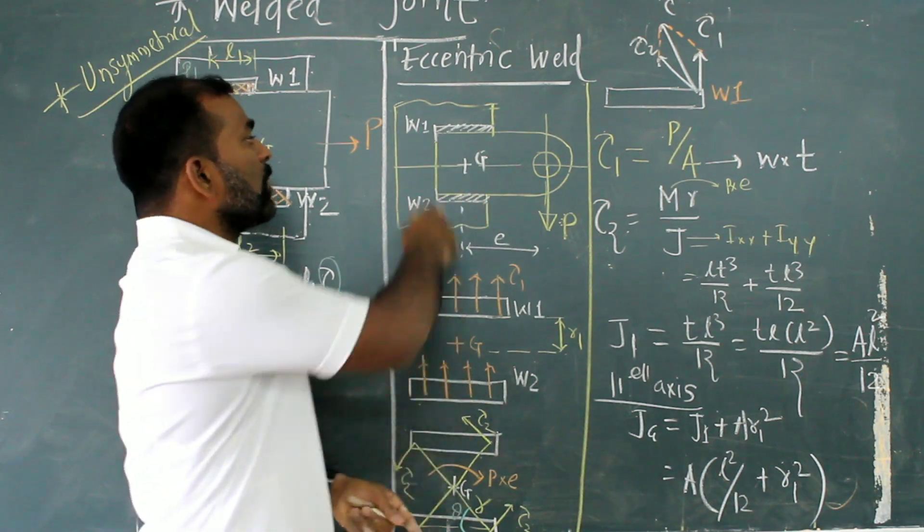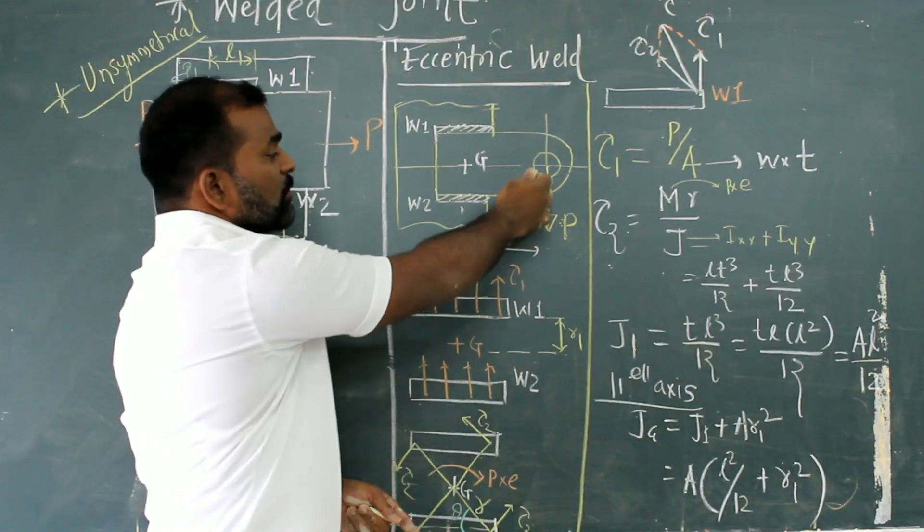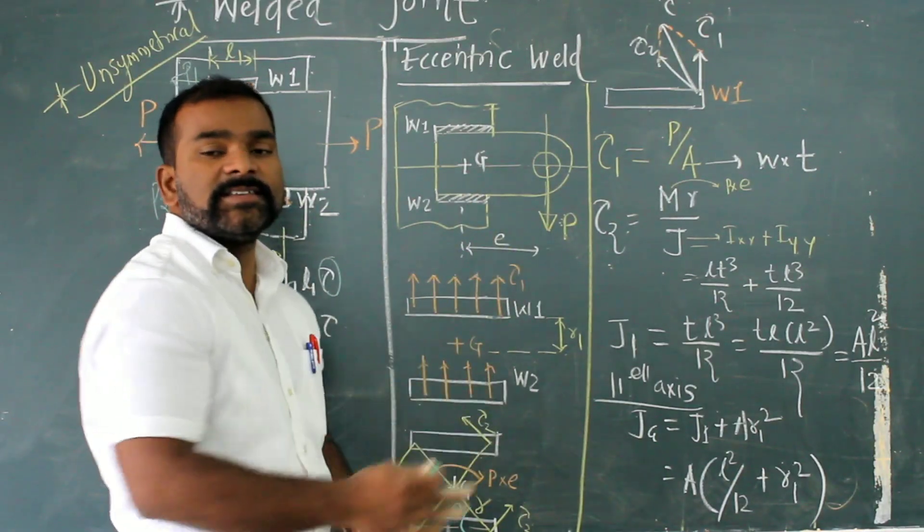Instead of those four bolts, I have mentioned the weld. So this is the 3D joint: weld 1, weld 2, having some load. As we know, the distance between load to the CG is called eccentricity.